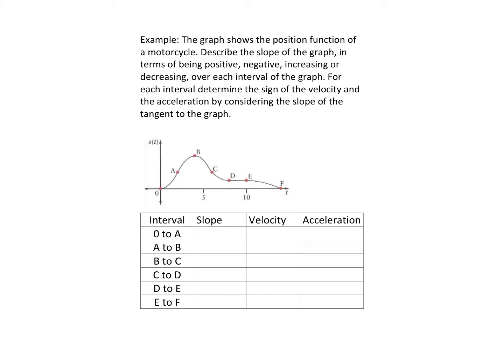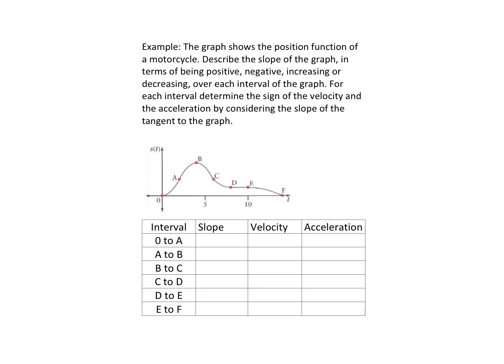If I look at the segment from 0 to A, I see that the slope is positive. From A to B it's still positive. From B to C it's negative. C to D it's negative. D to E it's a horizontal line, so it has a slope of 0. And then E to F it is again negative.